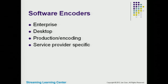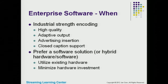That's our hardware. Now let's move to software — four categories: enterprise, desktop, production encoding, and service provider specific. Then we'll get into cloud and server-based transcoding. The enterprise software category is essentially a category of one: it's from HayVision.